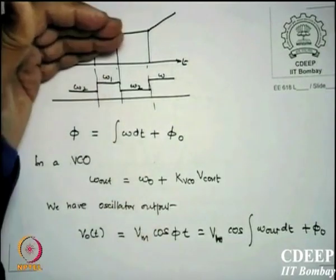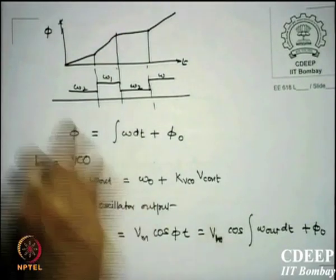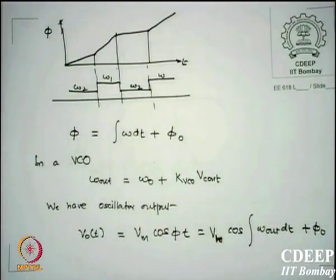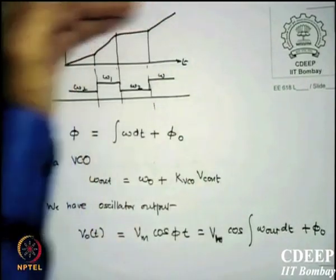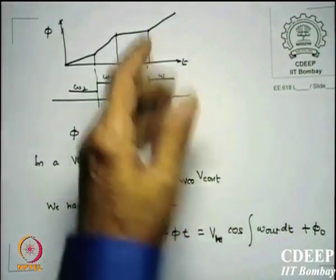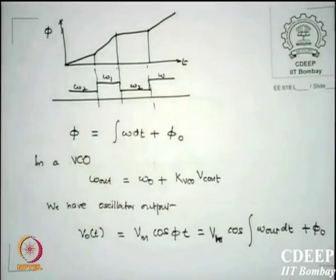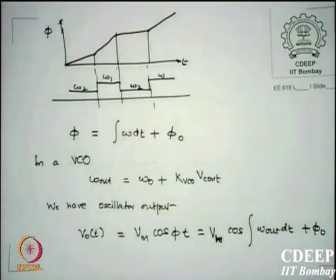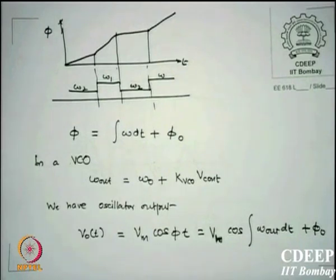If a segment of the φ(t) curve has a certain slope, it corresponds to frequency ω2. A higher slope corresponds to a higher frequency. When the same slope recurs, the frequency returns to ω2. So mathematically, dφ/dt = ω, and therefore φ = ∫ω·dt + φ0, where φ0 is the initial phase at t = 0.